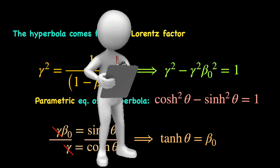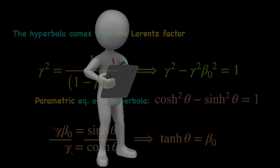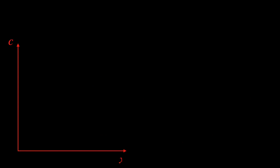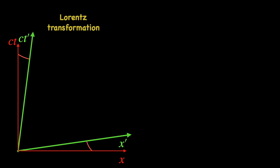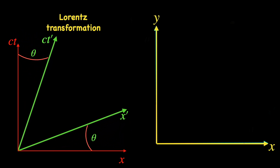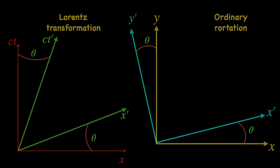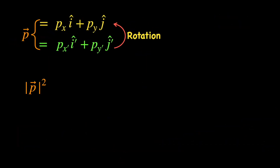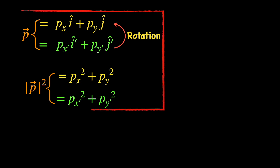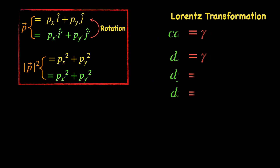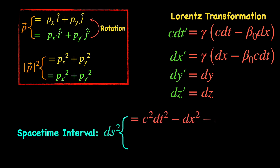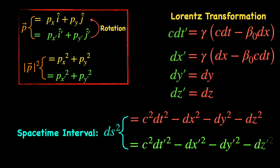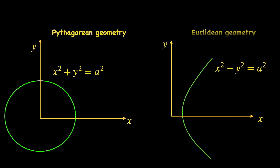Scientists have also come up with a fashionable name for this hyperbolic angle — they call it the rapidity. We should also wonder why the Ct and x-axis rotate towards each other in Lorentz transformation, whereas in normal rotation the whole coordinate axis system rotates. This is because normal rotation conserves the magnitude of a vector, which is defined as a sum of the squares of all its components as per Pythagorean geometry. On the other hand, Lorentz transformation conserves the space-time interval between two events, defined by a combination of the squares of the space and time coordinate differentials according to the rules of Euclidean geometry. So Pythagorean geometry relates to a circle whereas Euclidean geometry relates to a hyperbola.